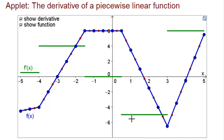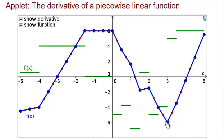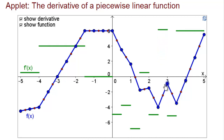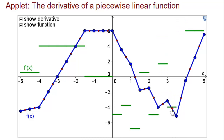Then the slope becomes negative, so we have a negative derivative, and then it becomes positive again. You can change the function f by dragging up and down on the blue circles, and the value of the derivative changes correspondingly. Whenever you drag one of these blue points, you increase the slope on one side and decrease it on the other. If you grab one of the red points in the middle of a line segment, that segment stays with the same slope, so f prime of x in that region is unchanged, but the neighboring slopes change.